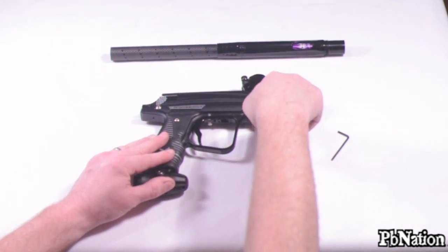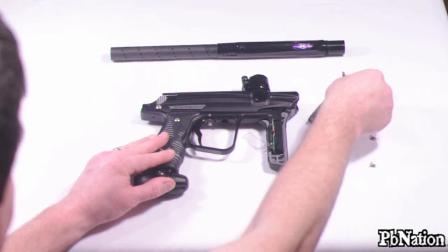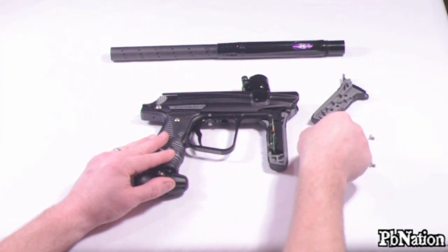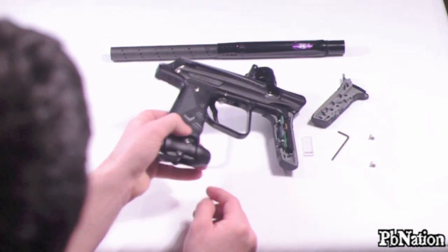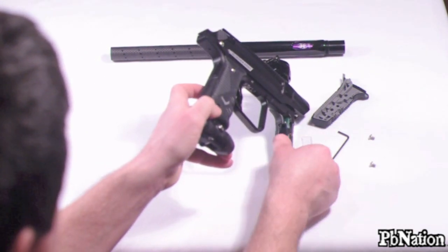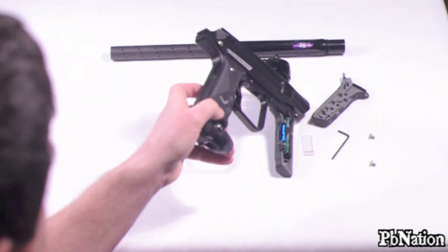And again, 3/32nd Allen wrench, two screws, and boom! The foregrip is actually part of the grip frame. It's one big piece.